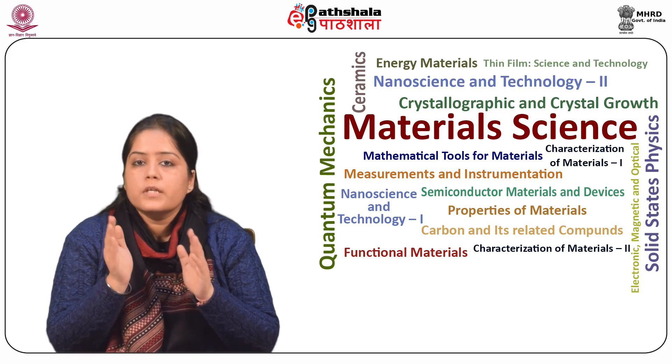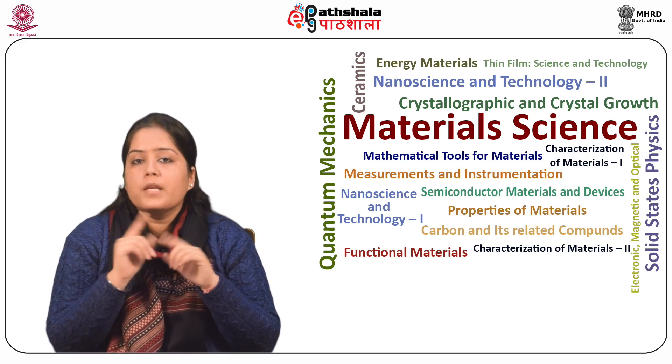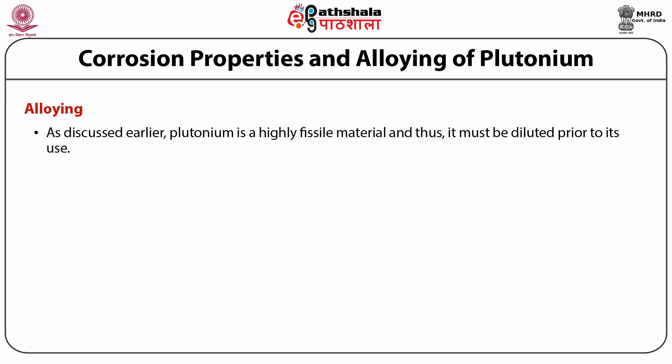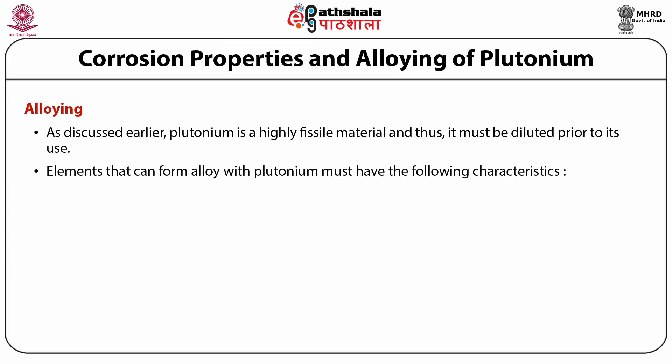The important corrosion issue for clad plutonium is pinning. Now we will discuss the alloying of plutonium. Plutonium is a highly fissile material and must be diluted prior to use. Its physical, chemical and mechanical properties do not allow it to be used in unalloyed form, as it has a stronger affinity to produce intermetallic compounds than uranium. However, both plutonium and uranium have similar behaviour in alloy formation.